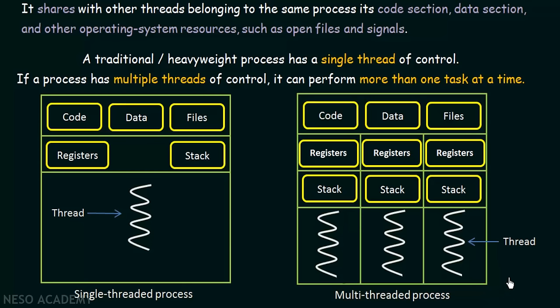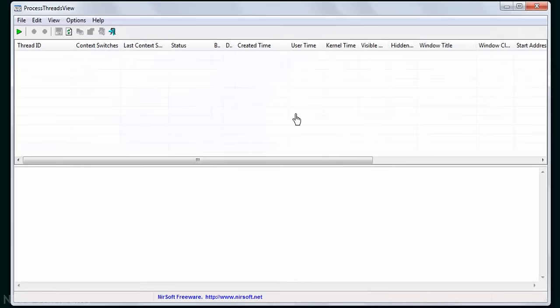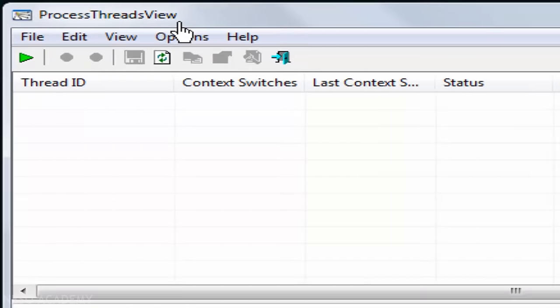From this we understand that multi-threaded processes are much more efficient compared to single-threaded processes, making computation faster. Most systems today follow the multi-threaded approach. Here I have a small software called Process Threads View which helps us see the processes and threads running in our system.